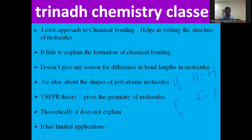The main drawback of Lewis theory is that it gives no idea about the shapes of polyatomic molecules — molecules with more than two atoms. To overcome these difficulties, VSEPR theory, the valency shell electron pair repulsion theory, was introduced. It gives a good idea about the geometry of molecules, but it failed to explain things theoretically and has limited applications.